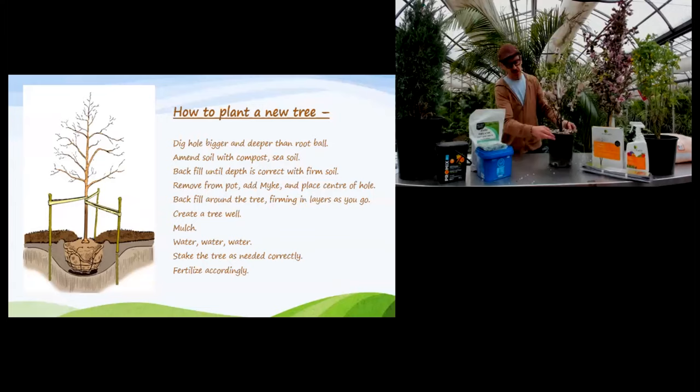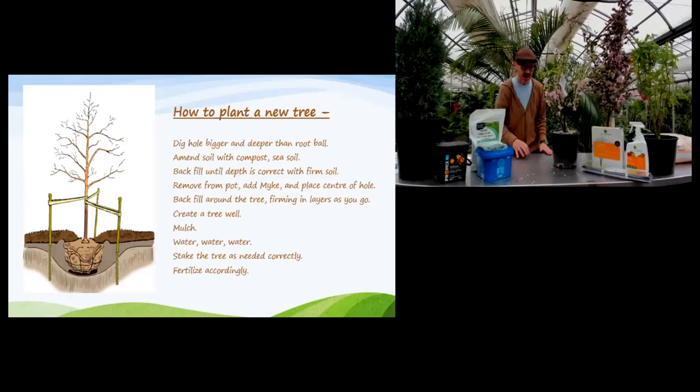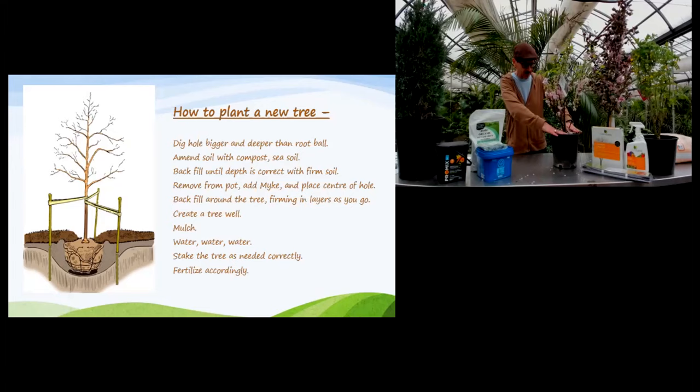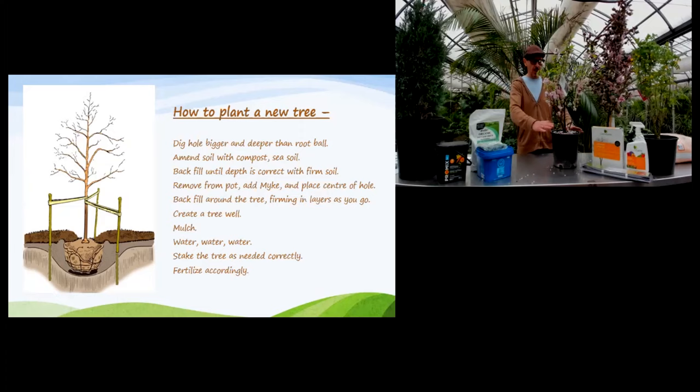Your tree is in the hole, you've got your soil mixed, all your backfill ready, you've added your Mike, your tree's nicely centered and roughly straight. Now you're going to backfill: take the rest of that existing soil blended with your Sea Soil, push it in. Come up about a quarter of the way and firm that soil — not using your heel, not pounding it in, just firming to get rid of air pockets and make sure it has good adherence to the root system. Don't push on the root system. Go up in quarters all the way until it's nice and firm.